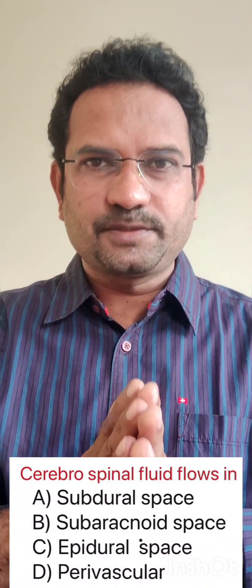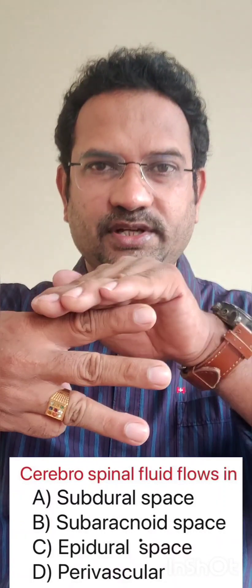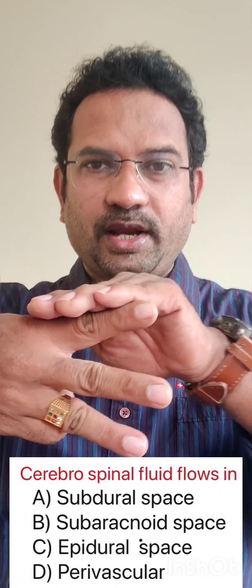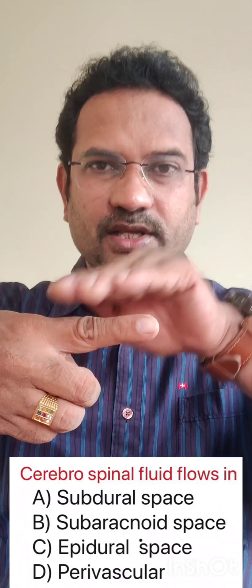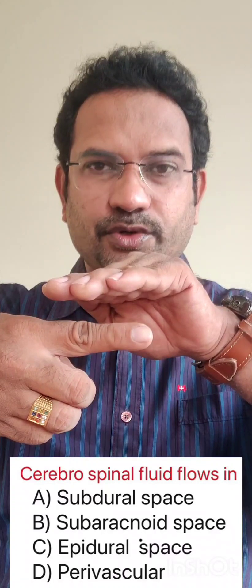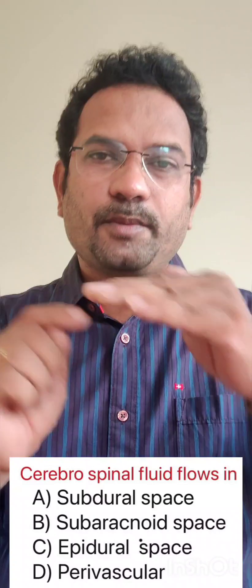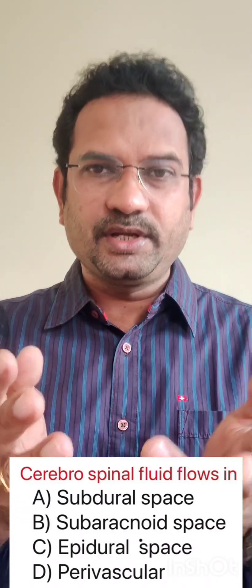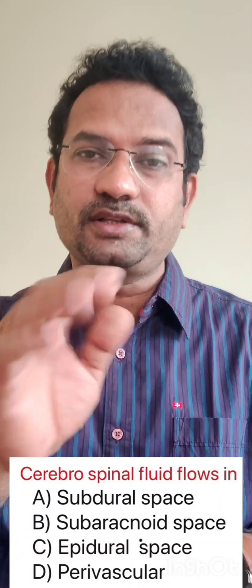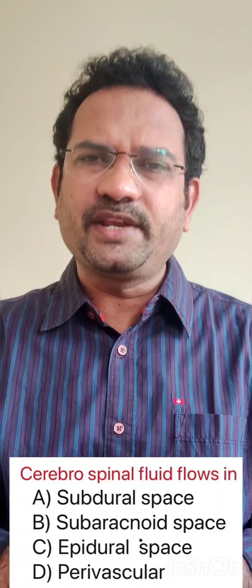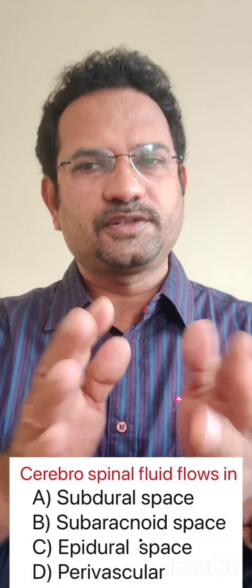Regarding the epidural space: you have dura mater, arachnoid mater, and pia mater, and outside there are bones. In the brain, the bone and dura mater are fused, but in the spinal cord there is a small gap. The gap between this bone, periosteum, and dura mater is known as the epidural space — this is where pregnant women get injected with general anesthetic during deliveries. Perivascular space refers to the space around blood vessels.